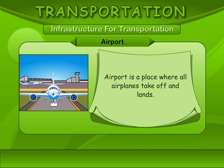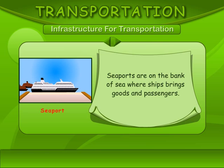Airport. An airport is a place where all airplanes take off and land. Seaport. Seaports are on the bank of the sea where ships bring goods and passengers.